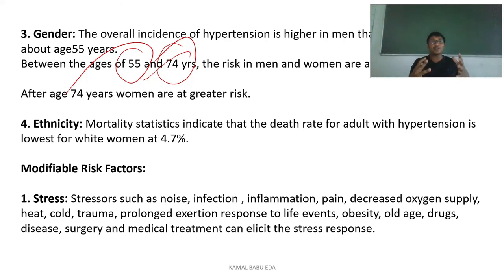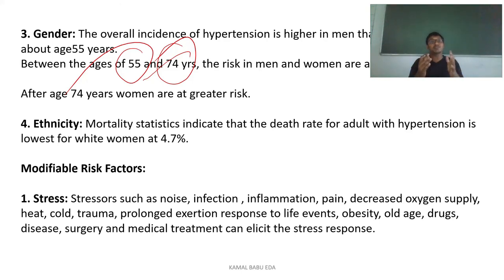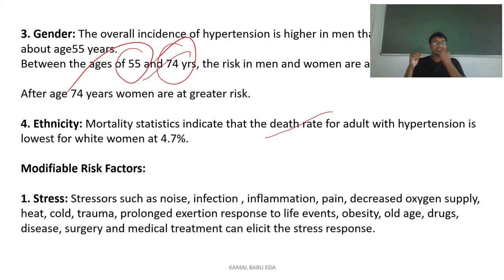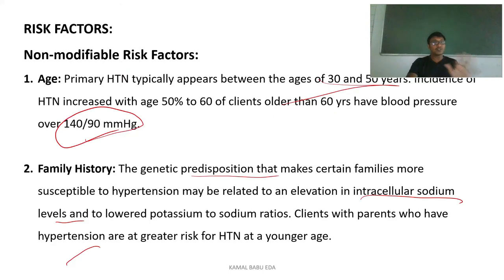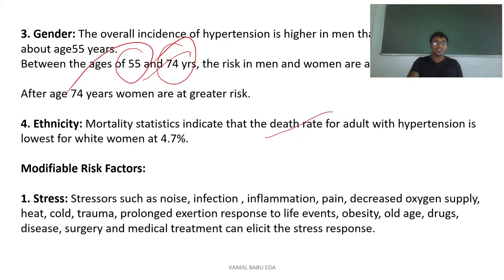Because of dietary and lifestyle changes, hypertension has become more common and is occurring earlier than the expected age. Regarding ethnicity, mortality statistics indicate that the death rate of adults with hypertension is lower in white women compared to black women. These are all non-modifiable risk factors — we cannot change age, family history, gender, or ethnicity.